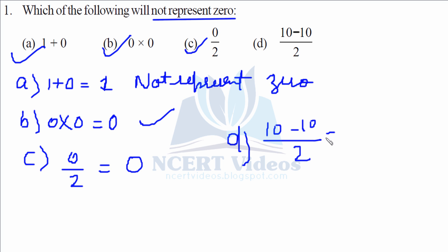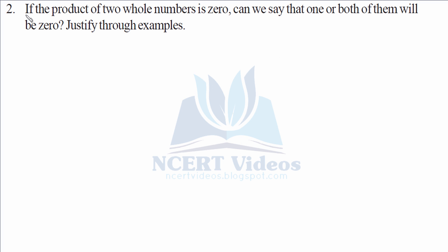Question two: if the product of two whole numbers is zero, can we say that one or both of them will be zero? We will justify through examples, so we will make some cases in order to make our justification.